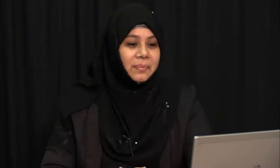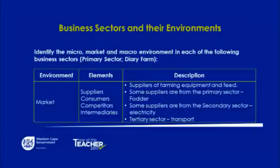Moving on to the market environment of the primary sector — the dairy farm. The elements are the suppliers, the consumers, the competitors, and the intermediaries. Management has no full control over the market environment; however, they do have influence. The suppliers of farming equipment and feed are a description of the market environment, and they have a choice as to who the suppliers are.